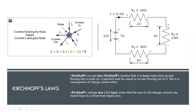As you can see here, the total current entering the junction — I1, I2, and I3 — should be equal to the total current leaving the junction, that is I4 plus I5.